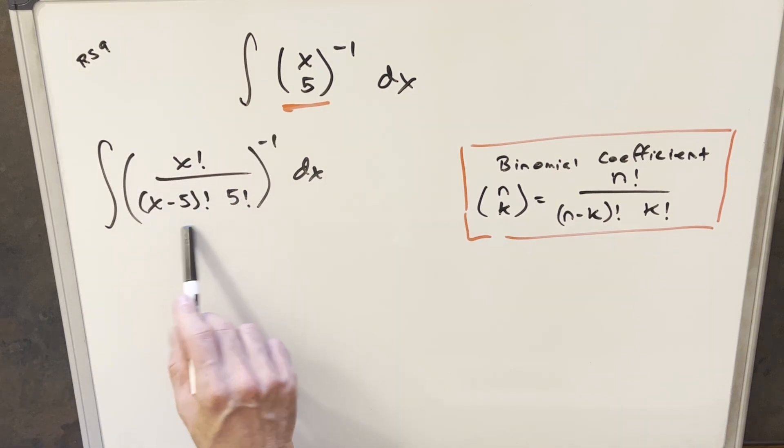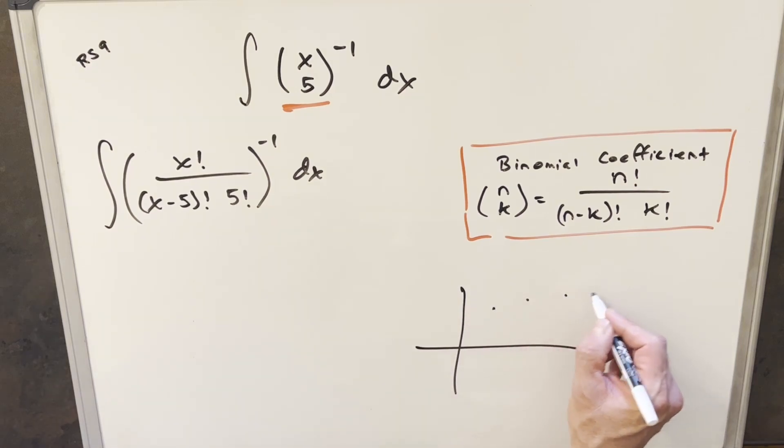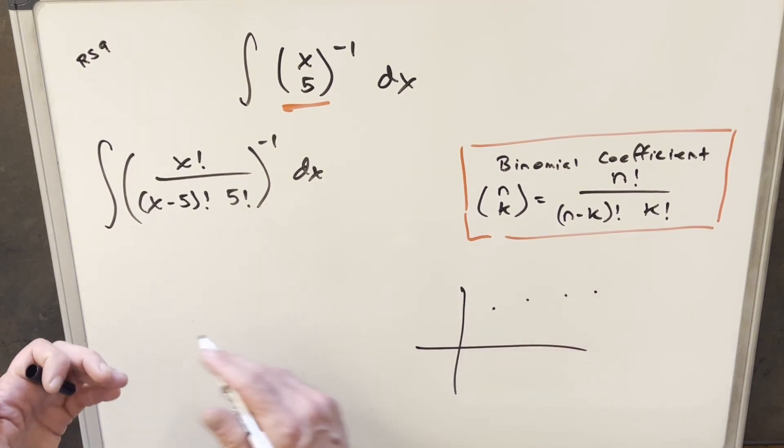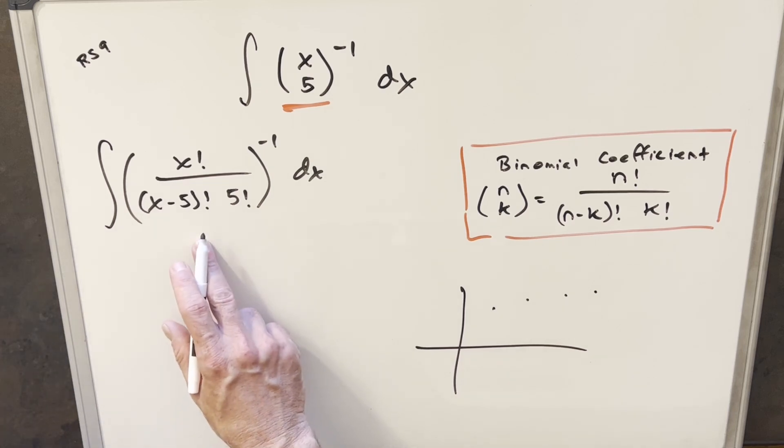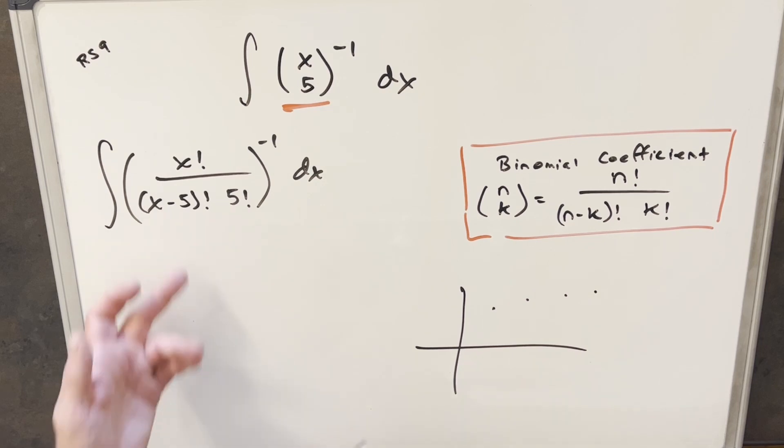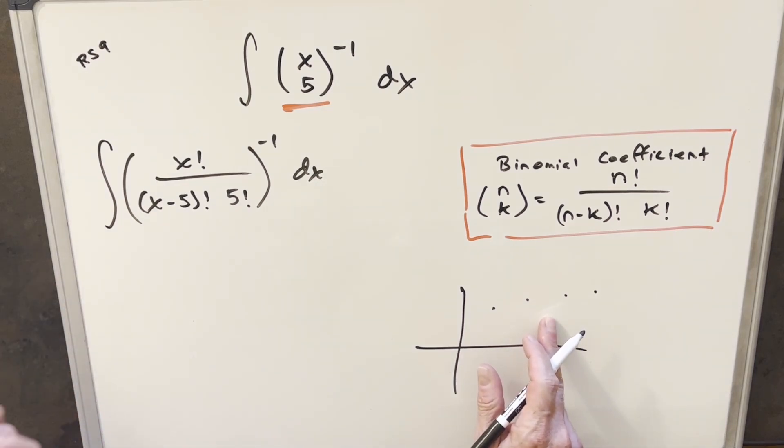And one concern you might have with having factorials in this expression is a factorial is actually a discrete function. So if we were to graph this, you'd end up with just a bunch of points. So if this was a definite integral and we tried to look for an area under the curve, well there's no area, there is no curve here. So with this discrete definition, this wouldn't really make any sense in an integral.